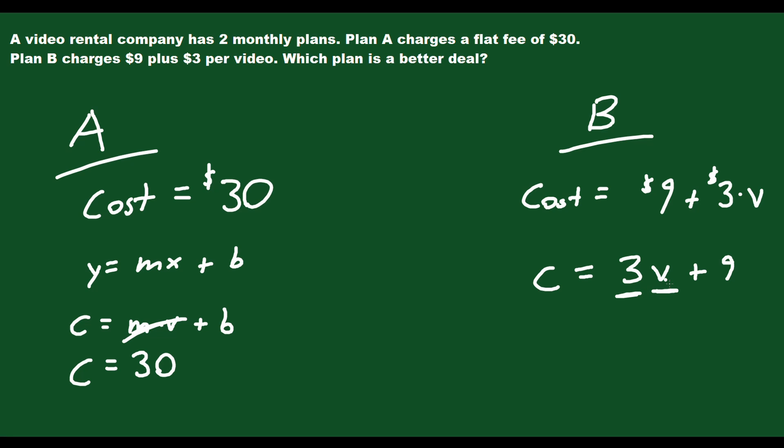So v is your variable, 3 is, in essence, your slope, and then 9 is your b value. That's what you start with. At the beginning, if you rent zero videos, you still end up paying $9. So 9 is kind of your starting point.